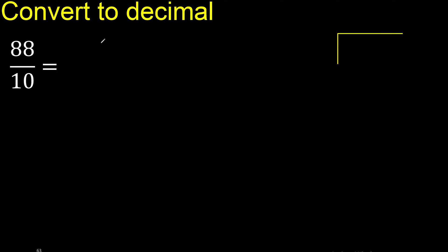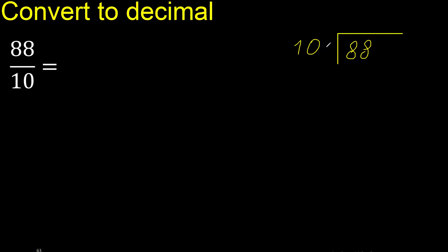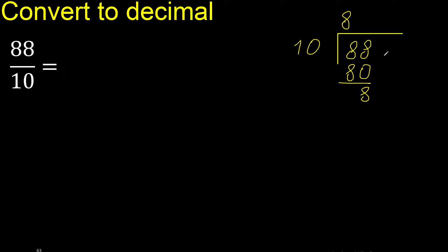88 divided by 10 — 10 multiplied by which number is nearest to 88 but not greater? 10 multiplied by 9 is greater, 10 multiplied by 8 is not greater, that is 80. Subtract — there is no remainder number, therefore complete.